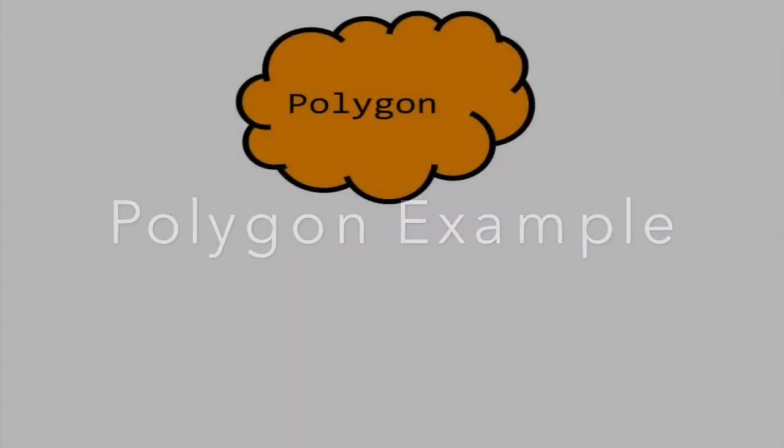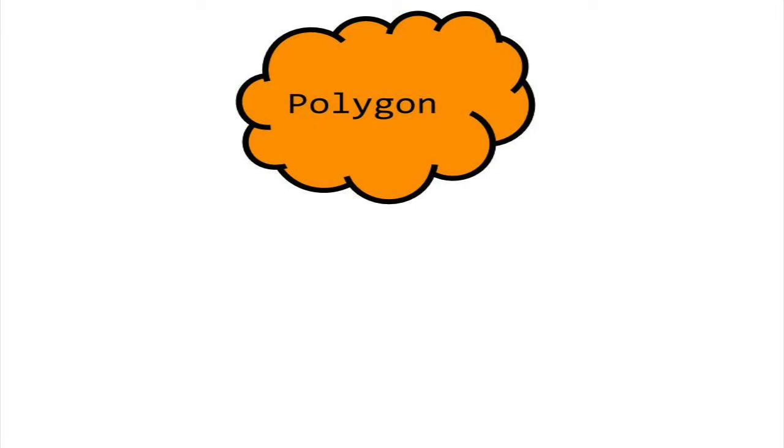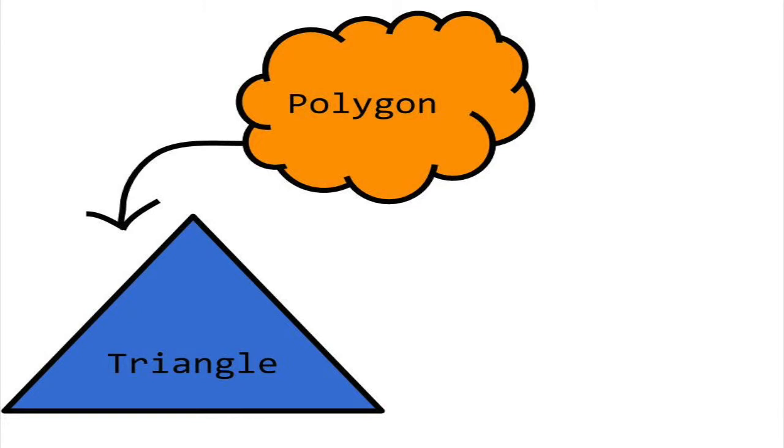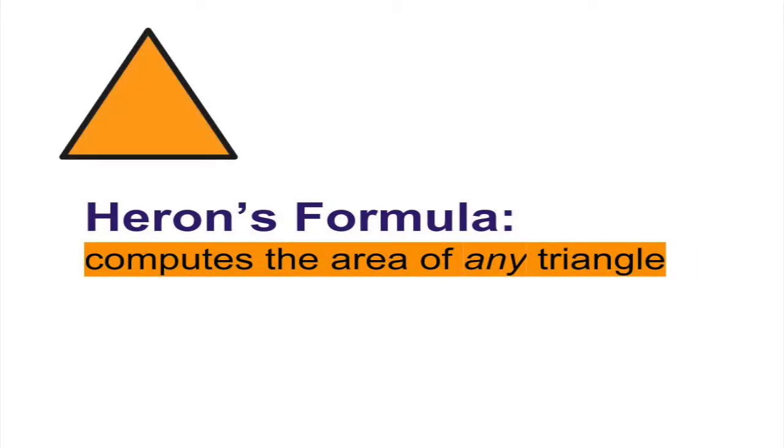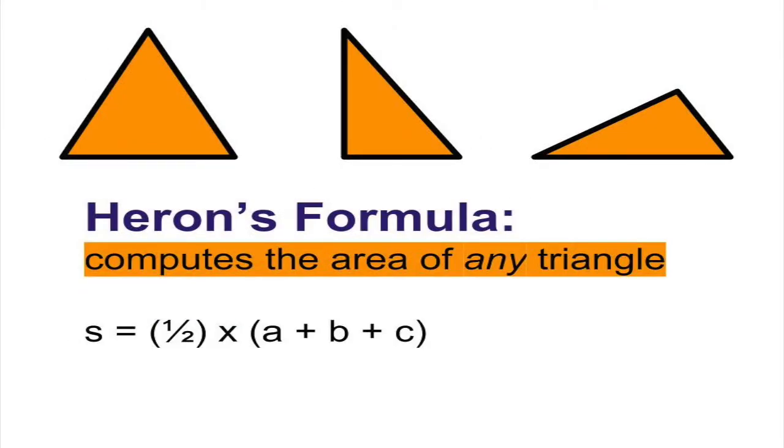Basically, a polygon is a two-dimensional space enclosed within straight edges. The minimum number of edges is three, so we can start implementing the virtual methods of polygon in triangle. We can find the area of any triangle by using Heron's formula. Let s equal one-half times each of the side lengths of the triangle.